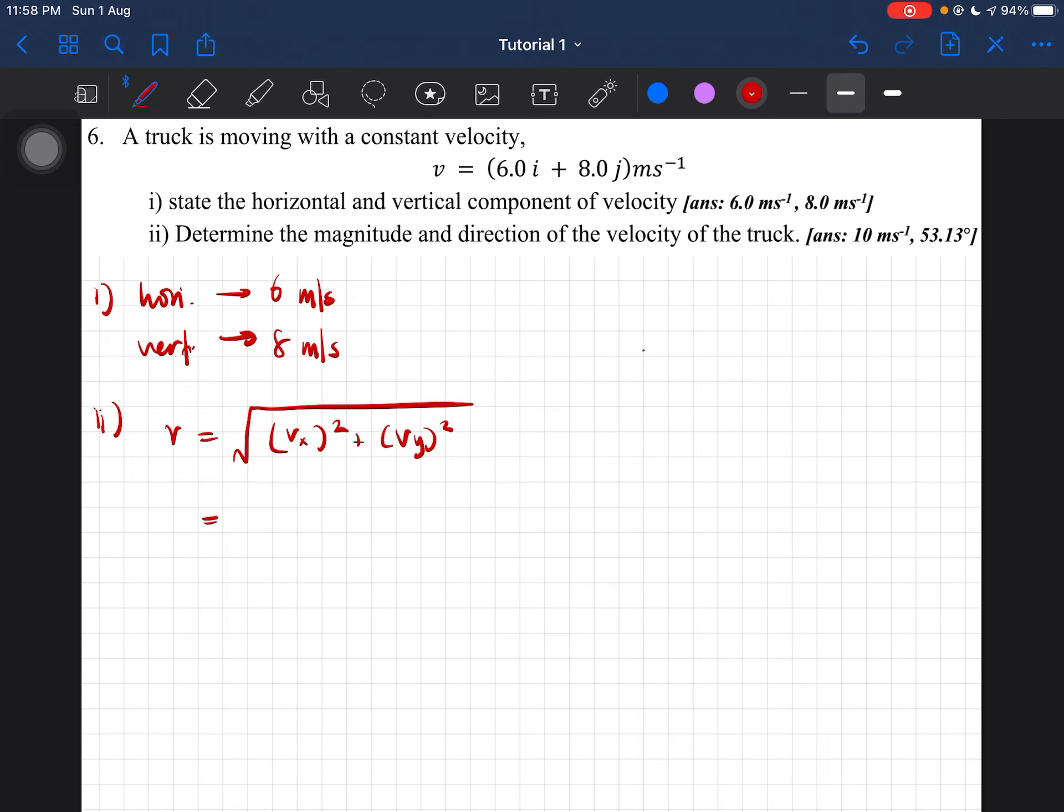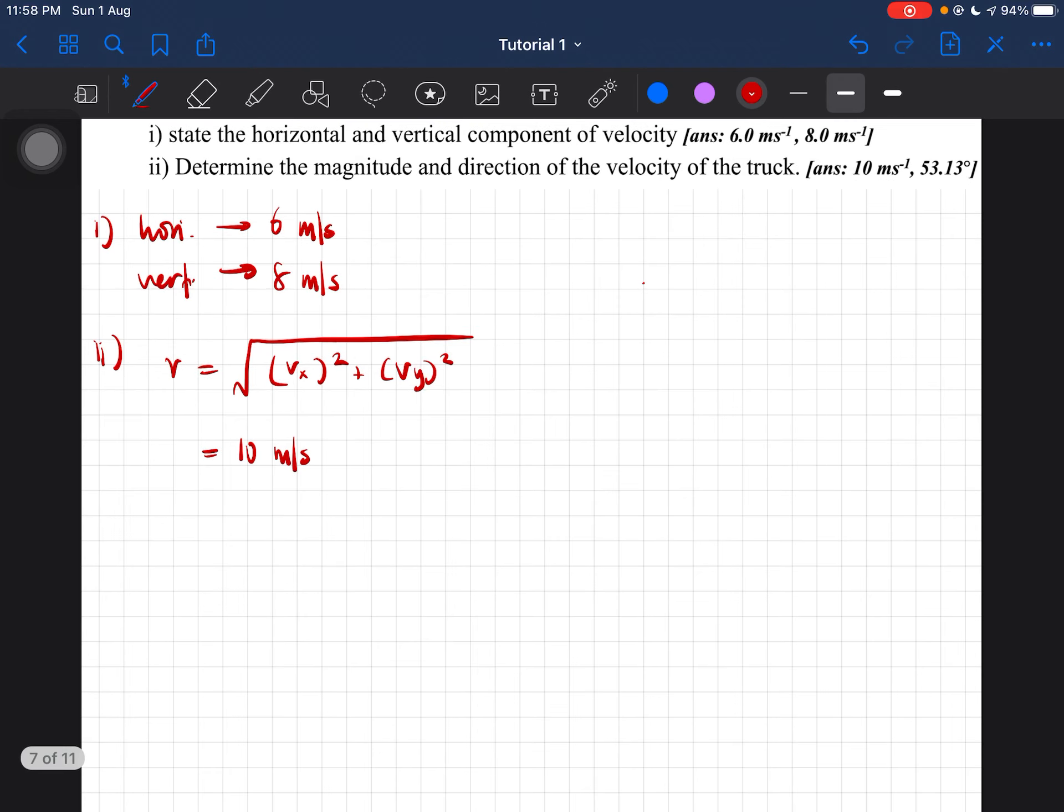Here you can substitute the values, and you'll get 10 meters per second. How do we find the direction? Using theta equals inverse tangent of velocity Y divided by velocity X component.